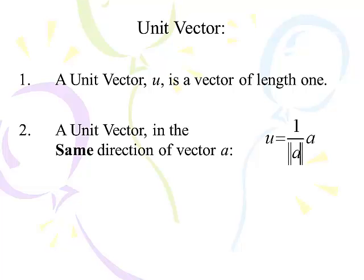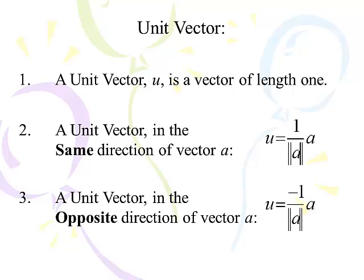To find a unit vector in the same direction as a given vector — in this case vector a — the unit vector, which we use a small u for, you find the magnitude of the vector and then multiply the vector by its reciprocal. So if the vector had a magnitude of 5, you would multiply it by 1/5, cutting it down by a factor of 5, giving you a vector with length 1. If we want a unit vector in the opposite direction, we simply multiply by negative 1 over the magnitude. For example, if the vector has a magnitude of 7 and you multiply by 1/7, it'll now have a magnitude of 1.